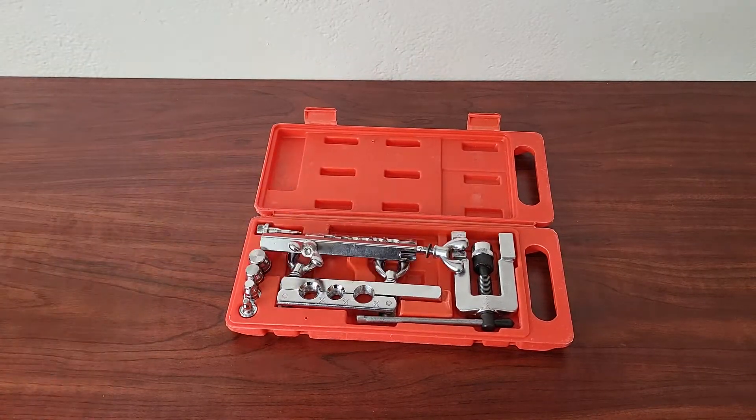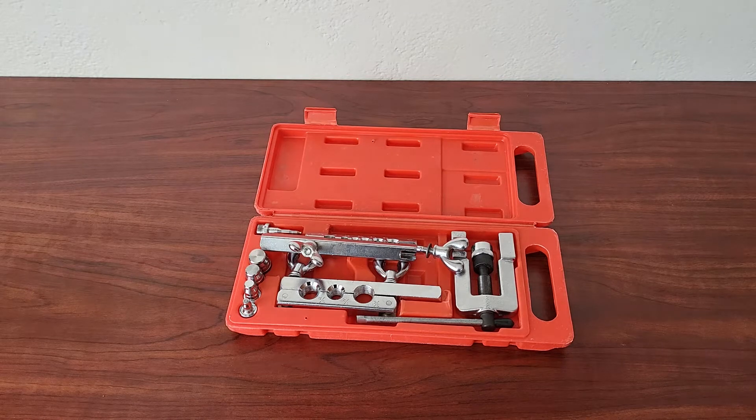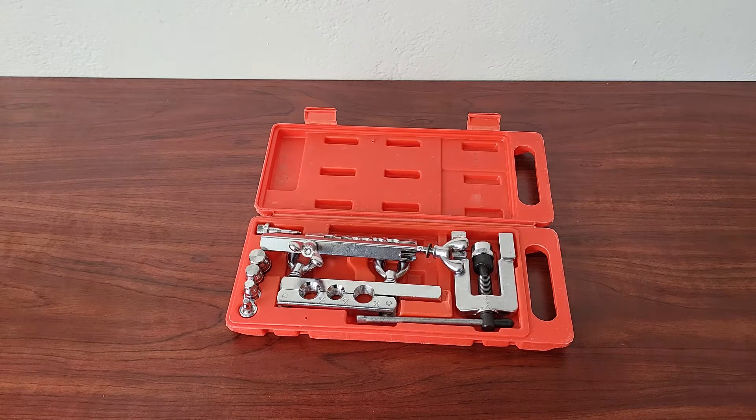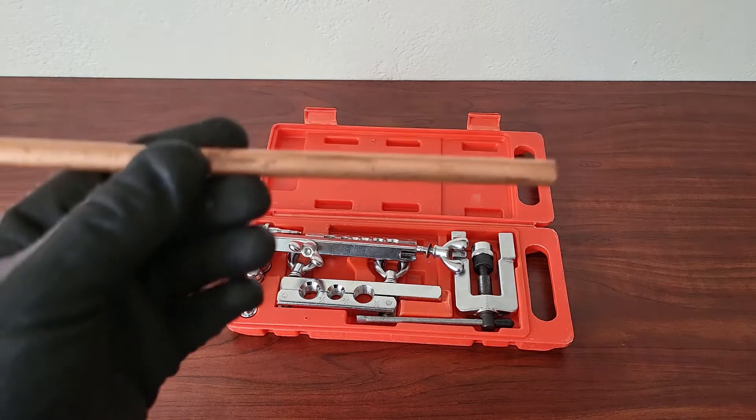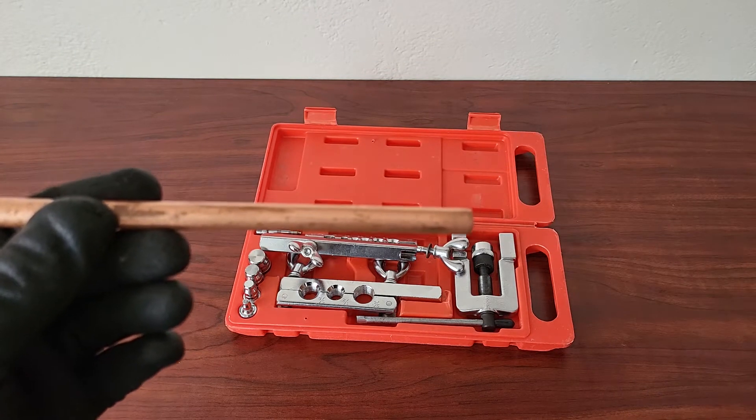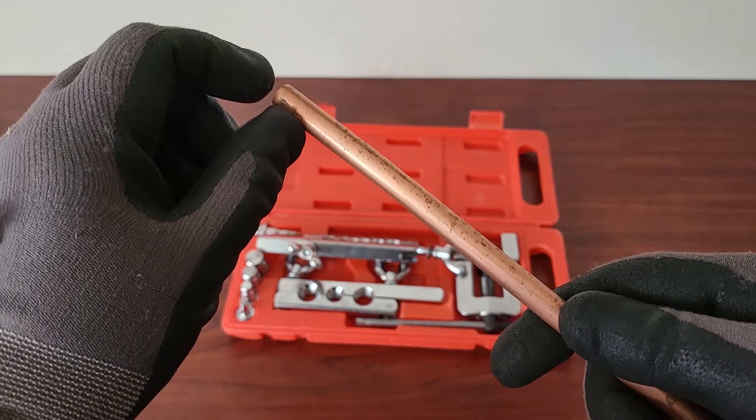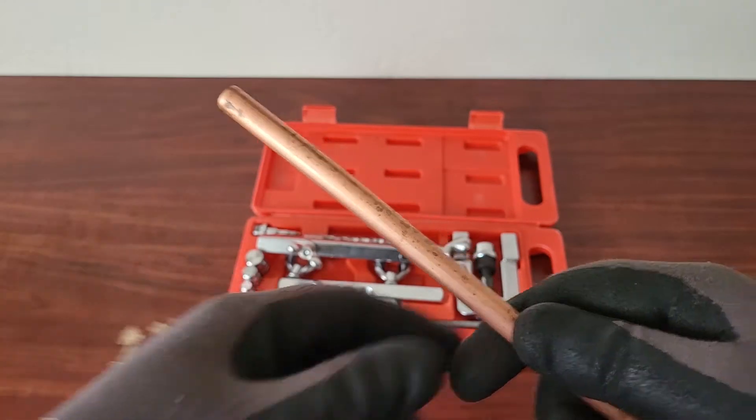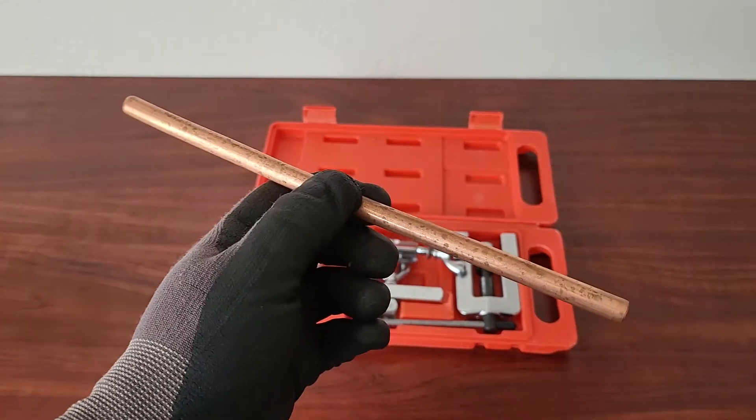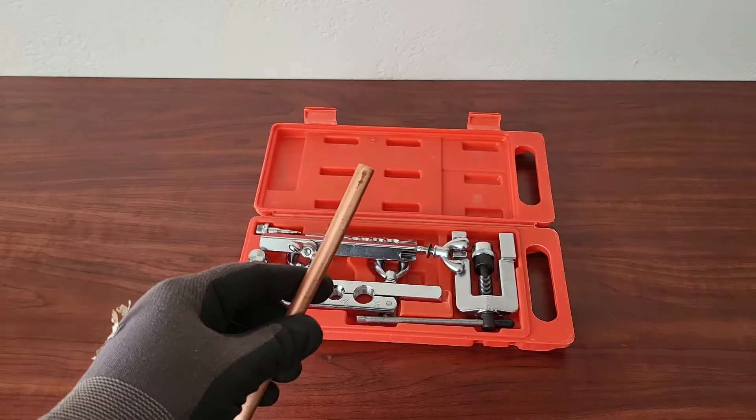So what we're going to do is we're going to demonstrate a flare and as well as a swage. For those of you that don't know, a flare is basically what you would do in order to allow the pipe to fit inside a flare nut. And then a swage would be the opening that you make where one piece of pipe can fit in another. But the first thing we're going to have to show you how to do is how to actually physically cut this pipe.